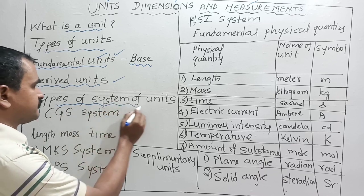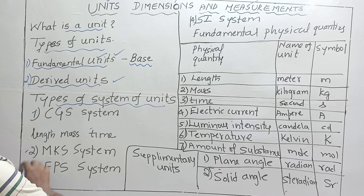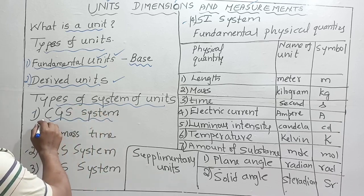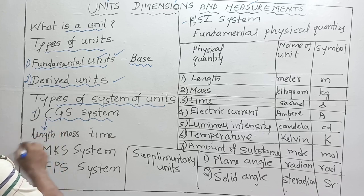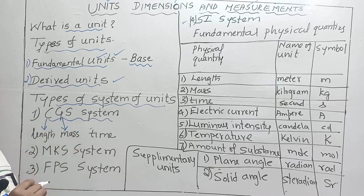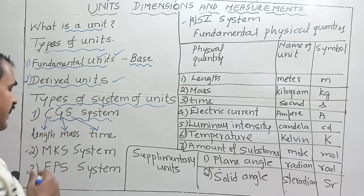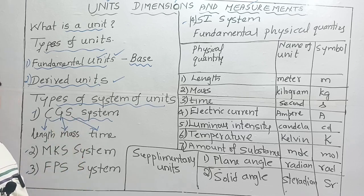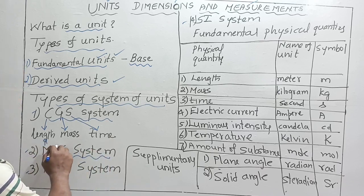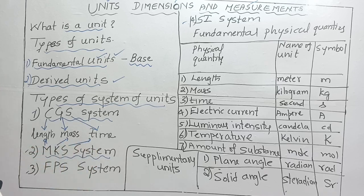There are four types of unit systems. The first is the CGS system: C stands for centimeter (unit of length), G stands for gram (unit of mass), and S stands for second (unit of time). The second is the MKS system: meter for length, kilogram for mass, and second for time.